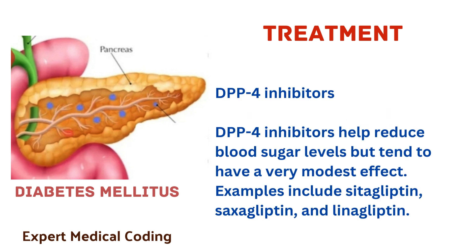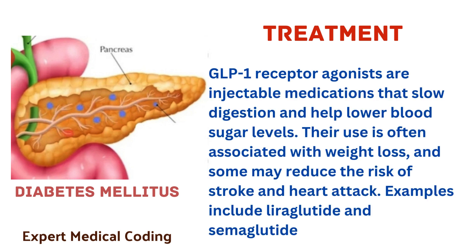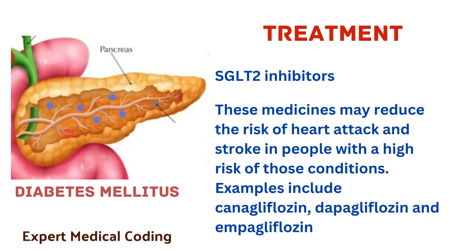DPP-4 inhibitors help reduce blood sugar levels but tend to have a very modest effect. Examples include sitagliptin, saxagliptin and linagliptin. GLP-1 receptor agonists are injectable medications that slow digestion and help lower blood sugar levels. Their use is often associated with weight loss and some may reduce the risk of stroke and heart attack. Examples include liraglutide and semaglutide. SGLT2 inhibitors affect the blood filtering functions in the kidneys by blocking the return of glucose to the bloodstream; as a result, glucose is removed in the urine. These medicines may reduce the risk of heart attack and stroke. Examples include canagliflozin, dapagliflozin and empagliflozin.